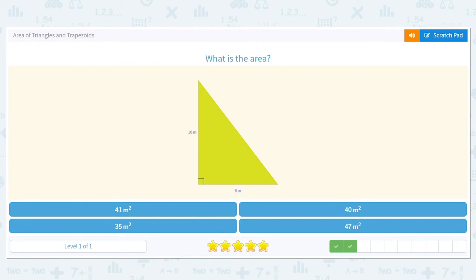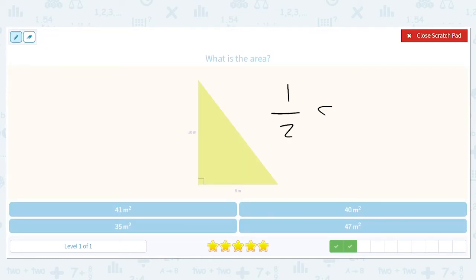How about this? One-half, eight times ten. Just for fun, we'll divide the ten by two. That'll give us eight times five, or 40.